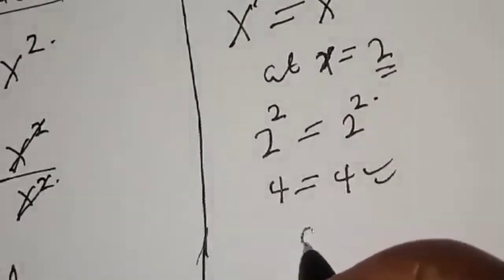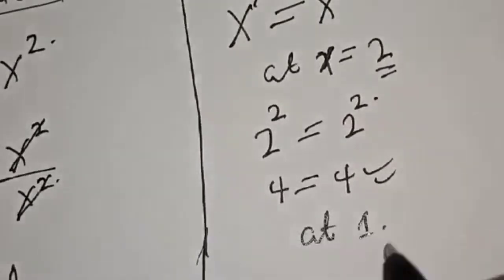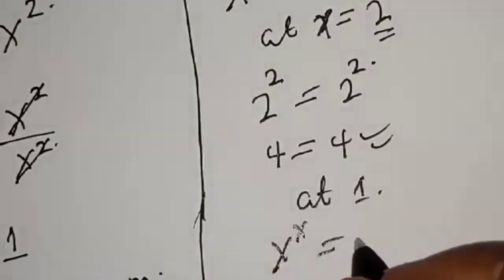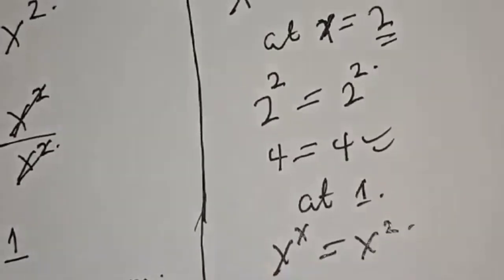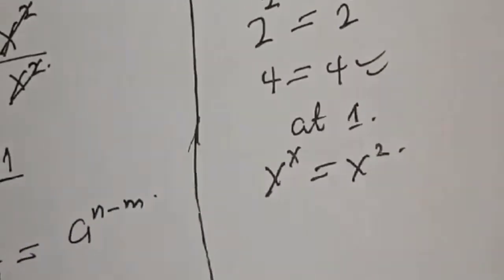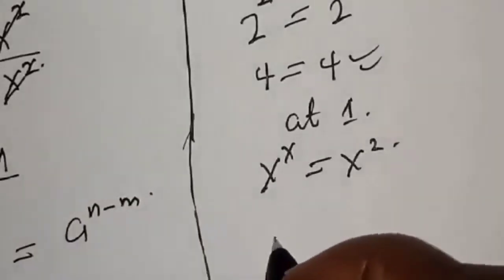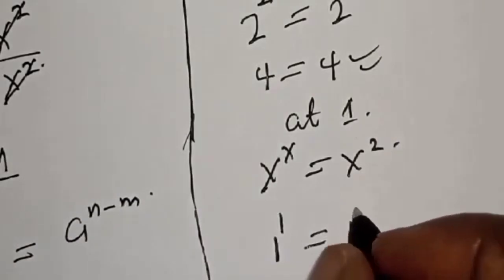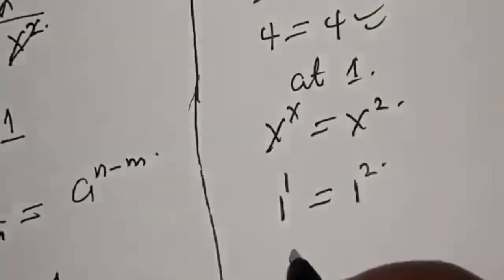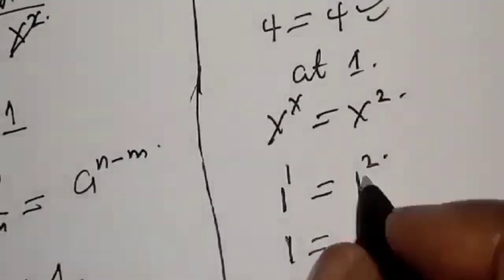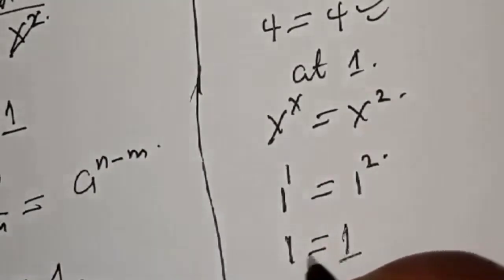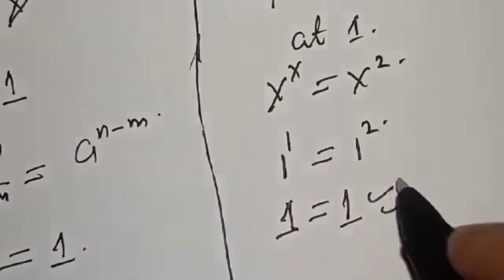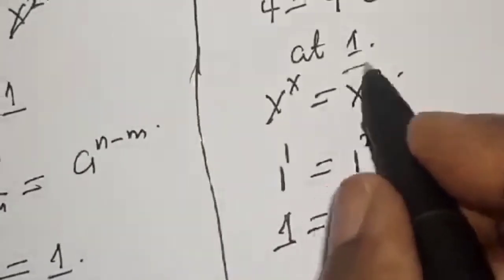Now let's check at s equals 1. Using s raised to power s equals s squared, we have 1 raised to power 1 equals 1, and 1 squared equals 1. The left-hand side equals the right-hand side, so we satisfy the given equation at s equals 1.